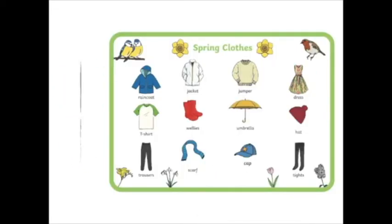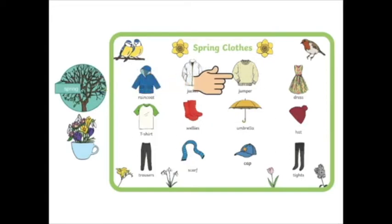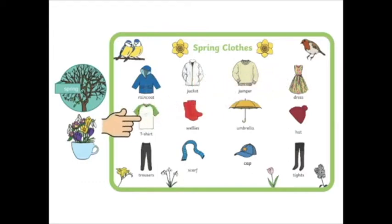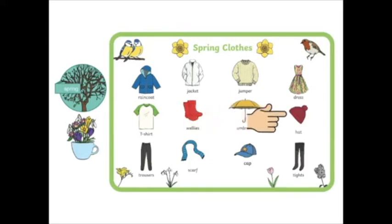These are springtime clothes. Raincoat, Jacket, Jumper, Dress, T-shirt, Wellies — for when it's raining. Umbrella — for when it's raining. An umbrella is not clothes, it's an accessory. A hat.